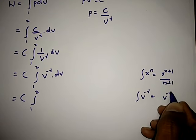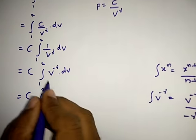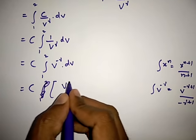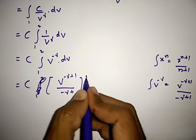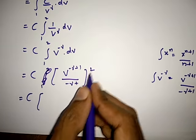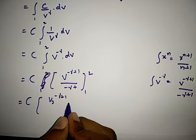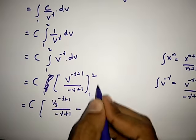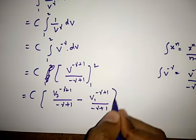In the same way, the integration of V to the power of minus gamma gives V to the power of minus gamma plus 1 by minus gamma plus 1. So if I apply integration for this, I can write C into V to the power of minus gamma plus 1 by minus gamma plus 1, evaluated in the limits of 1 and 2. Applying the upper limit and lower limit, it is C times V2 to the power of minus gamma plus 1 by minus gamma plus 1, minus V1 to the power of minus gamma plus 1 by minus gamma plus 1.